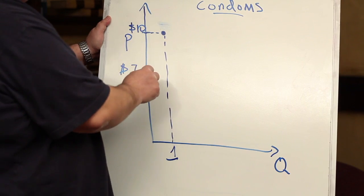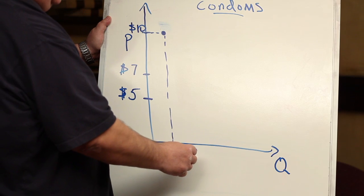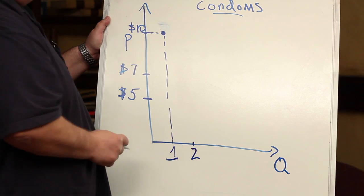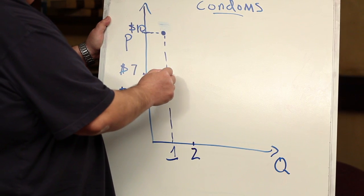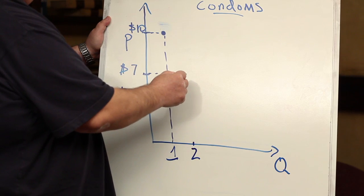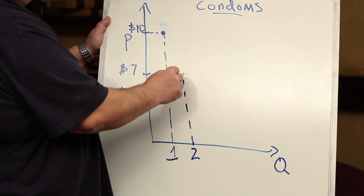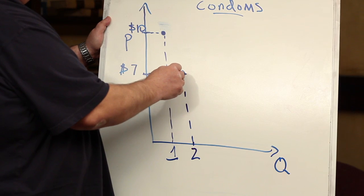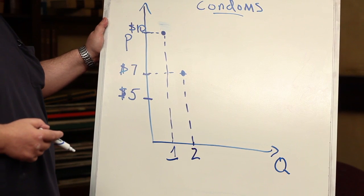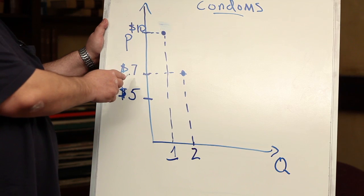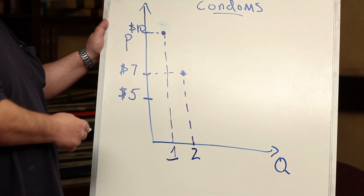But we said that when the price was seven dollars, the quantity demanded would be two. So let's just put that in as well. Let's go straight across and drop down to the two. And here's another quantity demanded right on our graph. Now we see that the quantity demanded at a price of seven dollars is two packs.